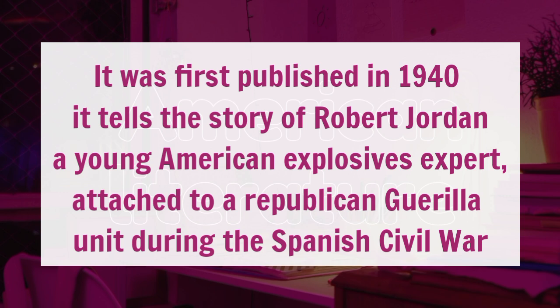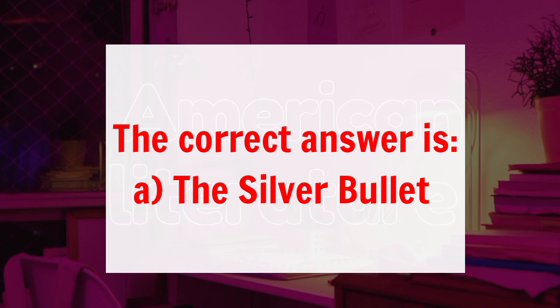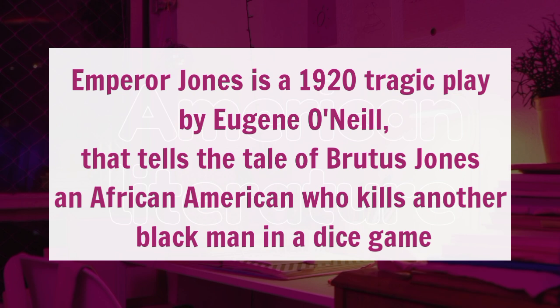Question 15: what was the original title of the play Emperor Jones? Option A, The Silver Bullet. B, The Indies. C, The Escape. D, The Emperor Brutus. The correct answer here is Option A, The Silver Bullet. Emperor Jones is a 1920 tragic play by Eugene O'Neill that tells the tale of Brutus Jones, an African-American who kills another black man in a dice game.